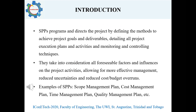The subsidiary project plan programs and directs the project by defining the methods to achieve the project goals and deliverables, detailing all project execution plans and activities, and monitoring and controlling techniques. They take into consideration all foreseeable factors and influences on project activities to ensure more effective management and reduce uncertainties, which will further reduce costs and budget overrun possibilities. These are commonly known as the scope management plan, cost management plan, time management plan, quality management plan, etc.